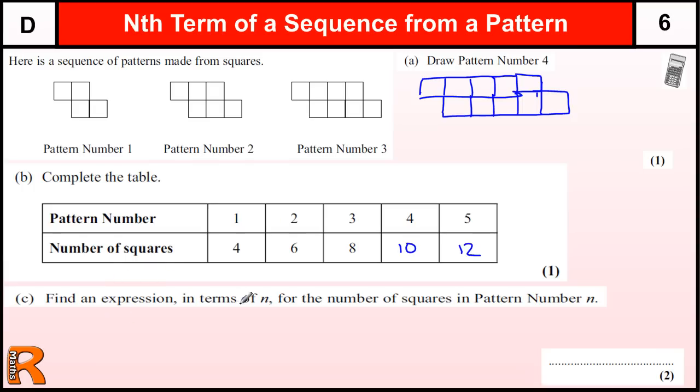Find an expression in terms of n for the number of squares in pattern number n. So this is what we call the nth term. So if I wanted to know pattern number n, how many squares is it going to take? Then I need to look at this sequence we've got already and try to figure out a connection.